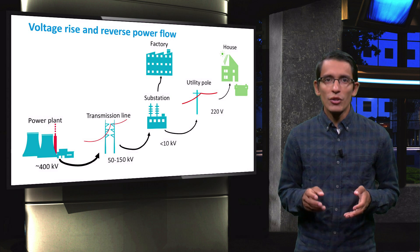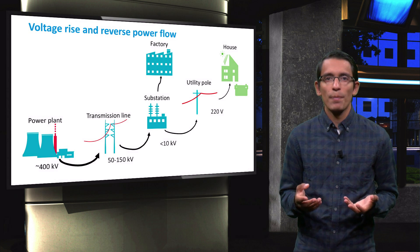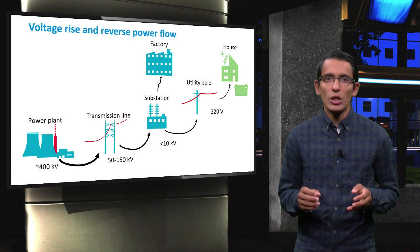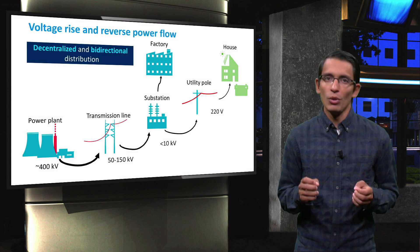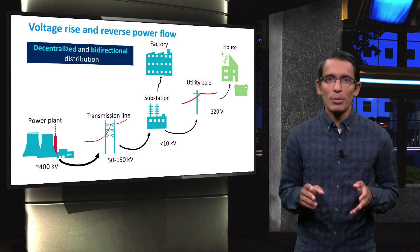When a house starts generating power at a different voltage level by means of PV systems, problems can arise. The linearity of the traditional system is now changed into a decentralized and bidirectional distribution system. In this distribution system, PV systems provide power at low voltage to the substation.